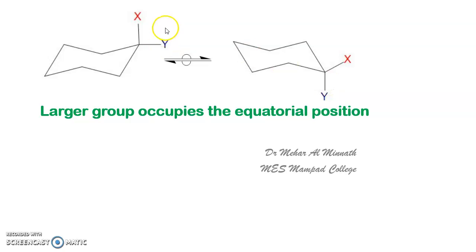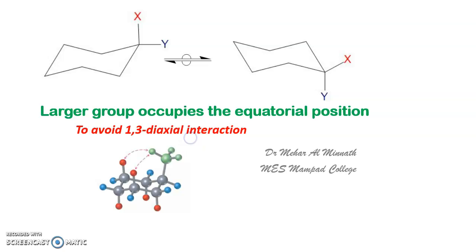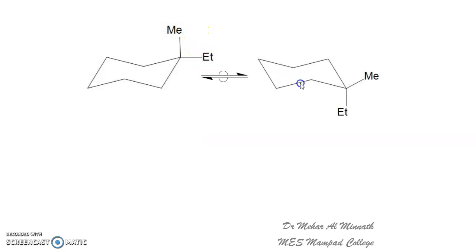If y is bulky, then the first conformer will be more stable. This is because in order to avoid the 1,3-diaxial interaction — which we have seen in detail — the larger group occupies the equatorial position. You can also explain it in terms of butane units, because in the equatorial position you get two anti-butane units. Using the diaxial interaction and the anti-butane analysis, we can explain why larger groups prefer to occupy the equatorial position. As an example, with methyl and ethyl substituents, ethyl in the equatorial position makes that conformer more stable.